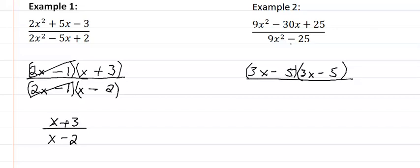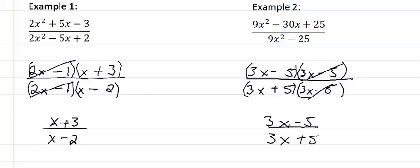And then in the denominator, we have a difference of squares. So I'm going to put my two boxes, square root of the first term, plus and minus square root of the second term. Take out the common factors, and we're going to be left with three x minus five, all over three x plus five, and we are in the simplest form possible.